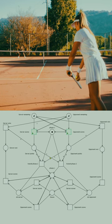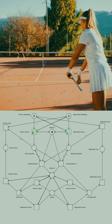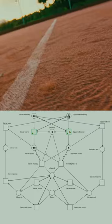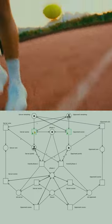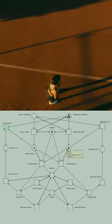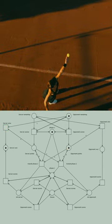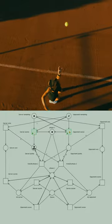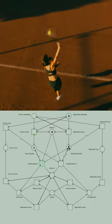The first phase is when both players have less than four points. If the server reaches four points and the opponent has less than three, the server wins. If the server reaches four points and the opponent has three, we transit to phase two.